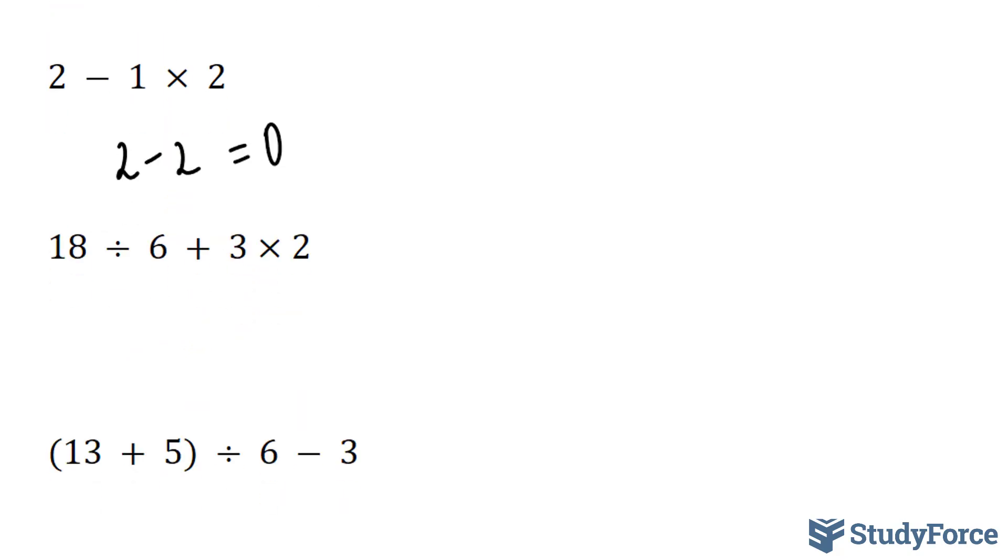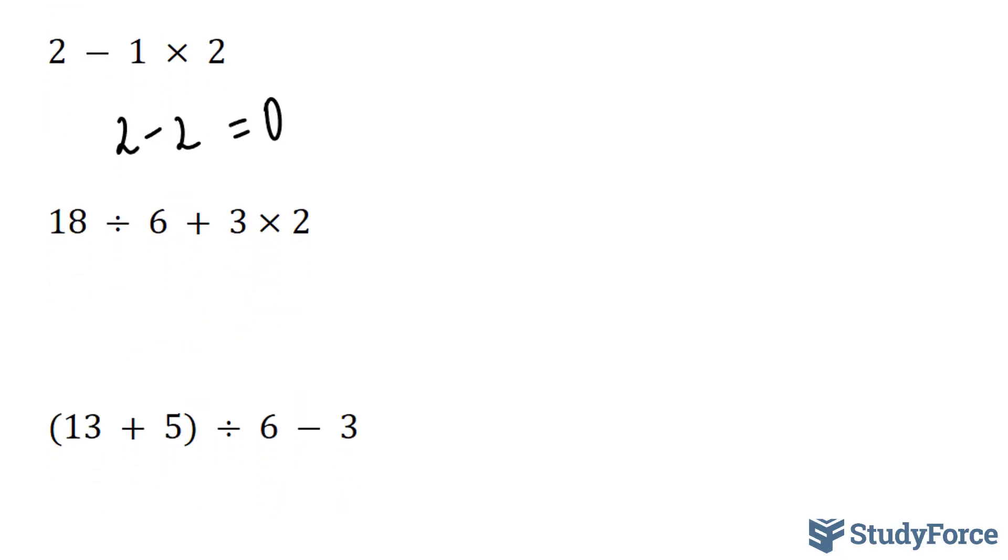Let's move on to the next example. This time we have 18÷6+3×2. According to the acronym BEDMAS, division comes before multiplication, but technically their priority is the same. You must perform what appears first from left to right. In our case, we have division appearing first, and then multiplication appearing second. 18 divided by 6 is 3, and 3 times 2 is 6. And in between is plus, so we add 3 and 6 together, which give us 9.